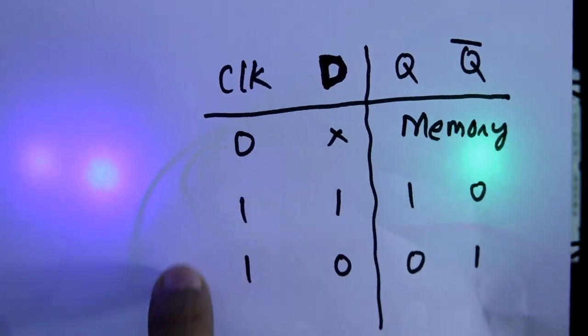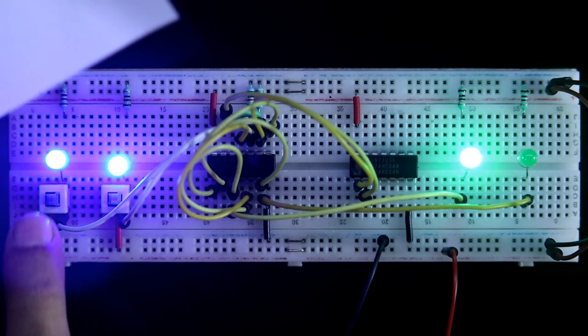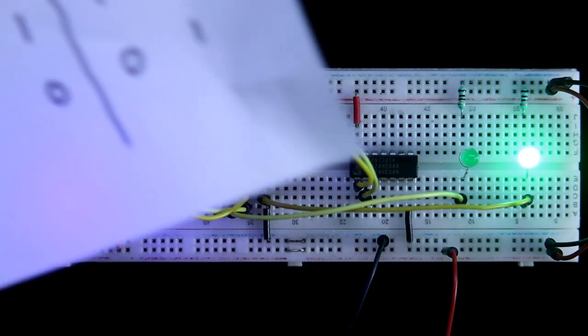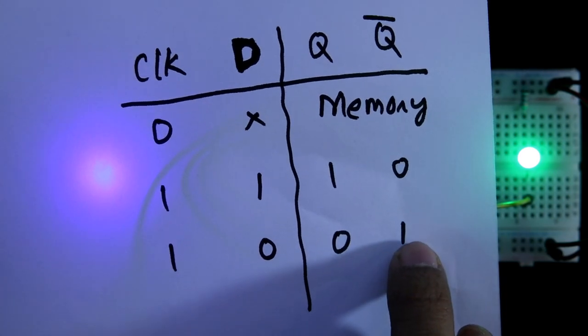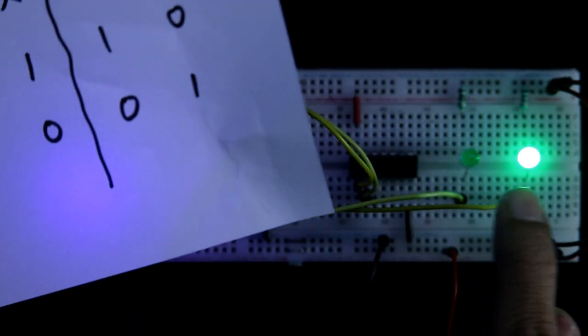And when clock is one and D zero, Q zero, Q bar one.